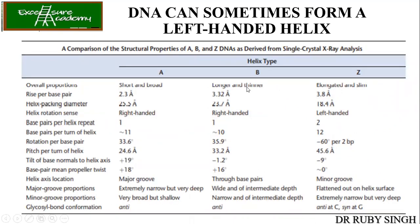The table comparing B, A, and Z-DNA is very important. Rise per base pair: 3.3 Å for B-DNA. Helix rotation is right-handed for A and B, left-handed for Z. Base pairs per turn: 10 for B (remember as 10.5), 11 for A. Both A and B-DNA have anti-glycosyl bond conformation, whereas in Z-DNA it is syn — specifically anti at cytosine and syn at guanosine positions. You need to memorize this table.